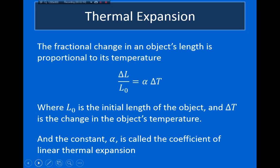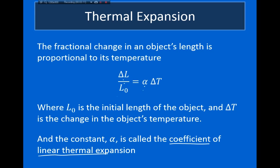So how do we describe thermal expansion? It turns out that the fractional change in the length of an object is proportional to temperature change. The fractional change — the change in the object's length divided by the initial length — equals a constant called the coefficient of linear thermal expansion, alpha, times the change in temperature. This alpha is actually a property of a material, so every material has a coefficient of linear thermal expansion.